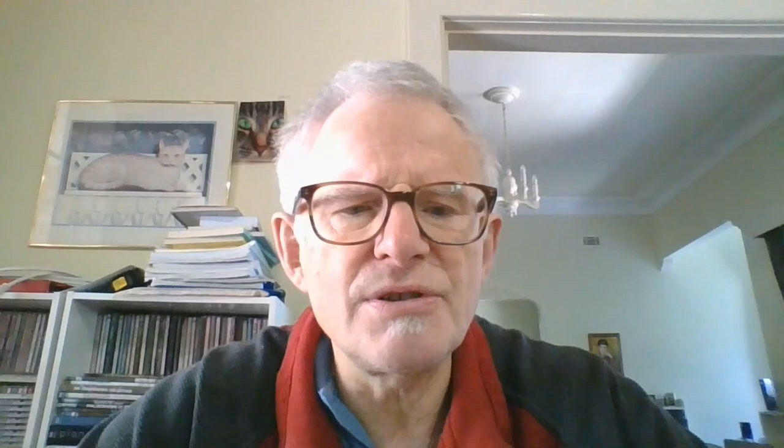The title of this video is 'Collatz Conjecture: showing off the predicted emergent properties that arise from extending the 3N plus 1 sequence, putting the Collatz Conjecture to shame.' Most of my life I've used dynamical models to predict the weather. Here I am using a dynamical model of the 3N plus 1 sequence — I call this model the NOAC sequence — to predict properties that should emerge when extending the 3N plus 1 sequence.